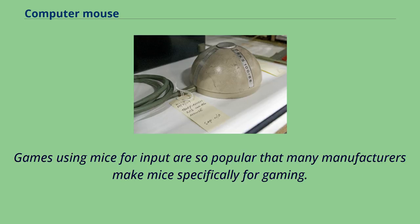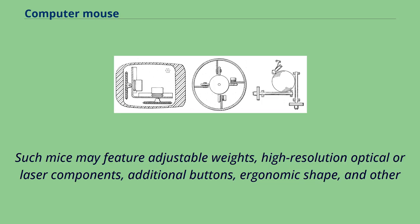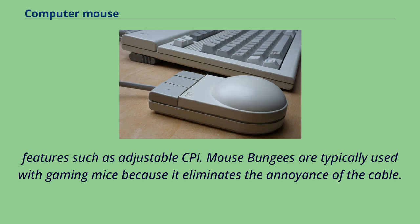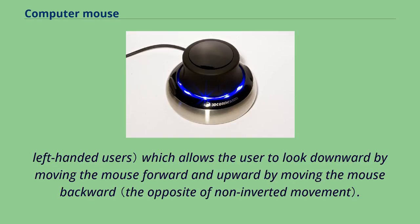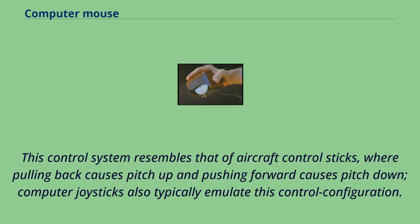Games using mice for input are so popular that many manufacturers make mice specifically for gaming, with features such as adjustable weights, high-resolution optical or laser components, additional buttons, ergonomic shape, and adjustable CPI. Mouse bungees are typically used with gaming mice to eliminate the annoyance of the cable. Many games have a setting named invert mouse — not to be confused with button inversion — which allows the user to look downward by moving the mouse forward and upward by moving it backward, resembling aircraft control stick behavior. Computer joysticks also typically emulate this configuration.